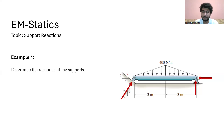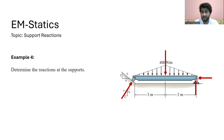We can draw this triangle like this. The other force is basically towards the roller. I have just pulled out this triangle like this. This 400 N/m force is acting throughout on the beam, so we can assume that this force is acting at the center of the beam.